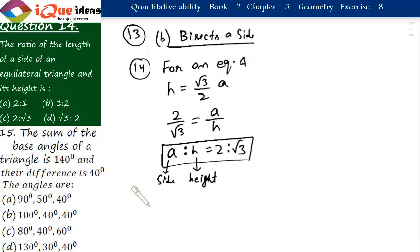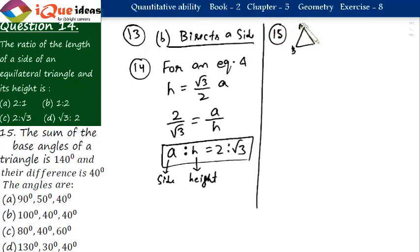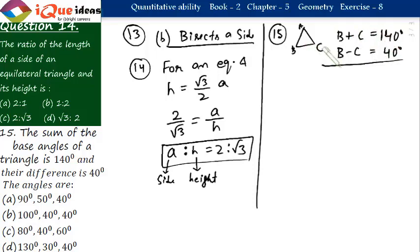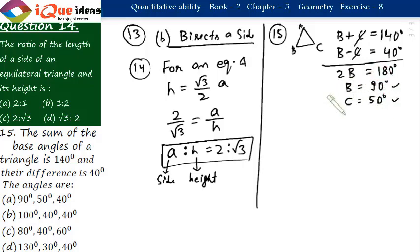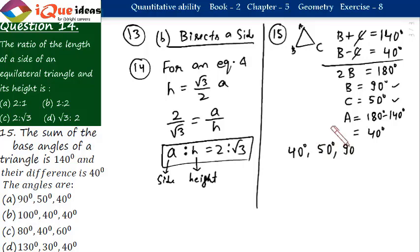Question number 15: the sum of the base angles of a triangle is 140 degrees and the difference is 40 degrees. Let the triangle be ABC with angle B plus angle C equals 140 and angle B minus angle C equals 40. Adding both equations: 2B equals 180, so B equals 90 degrees. Substituting back gives C equals 50 degrees. The third angle A equals 180 minus 140 equals 40 degrees. The angles are 40 degrees, 50 degrees, and 90 degrees — option A.